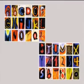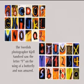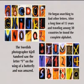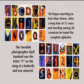Now let's have a few examples and we will make a decision: are we inside or outside of the definition domain of information? On this picture we see all the letters of our alphabet and also the numbers. The Swedish photographer Kjell Sandvit saw the letter F on the wing of a butterfly and was amazed. He took a microscope to look at the wing of a butterfly to find other letters, but he couldn't find them. So he looked at other butterflies, and after a long time of 15 years and traveling among 30 countries, he had found the complete alphabet.